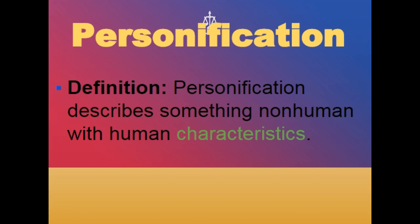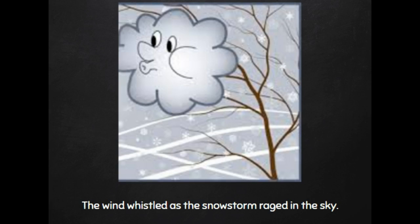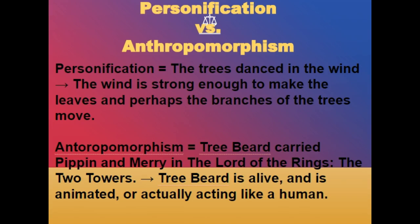Next we're going to talk about personification, but in context of personification versus anthropomorphism. You've always been taught that personification describes something non-human with human characteristics, but we tend to include when those things actually come to life — and that's not actually true. So first, let's start with examples of personification. One example would be: "the wind whistled as a snowstorm raged in the sky." Obviously the wind is not actually whistling because it's not a real character.